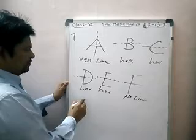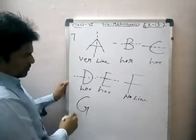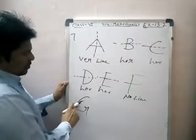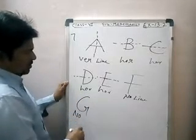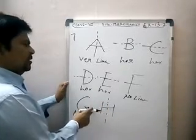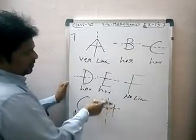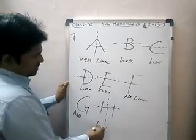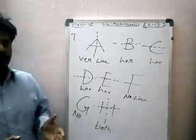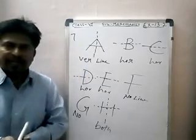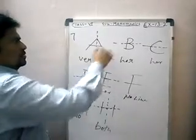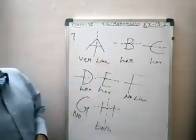G — if we draw vertical lines, left and right parts are not the same; if we draw horizontal line, upper and lower parts are not the same — so no line of symmetry for G. H — if we draw the vertical line, left and right parts are the same; if we draw the horizontal line, upper and lower parts are also the same — so H has both vertical and horizontal lines of symmetry.